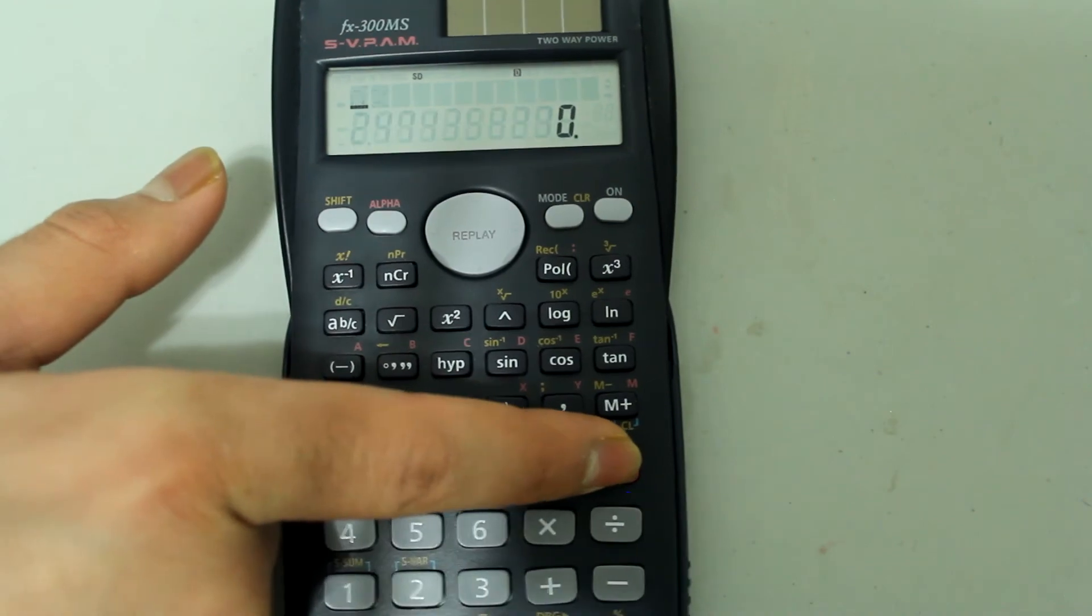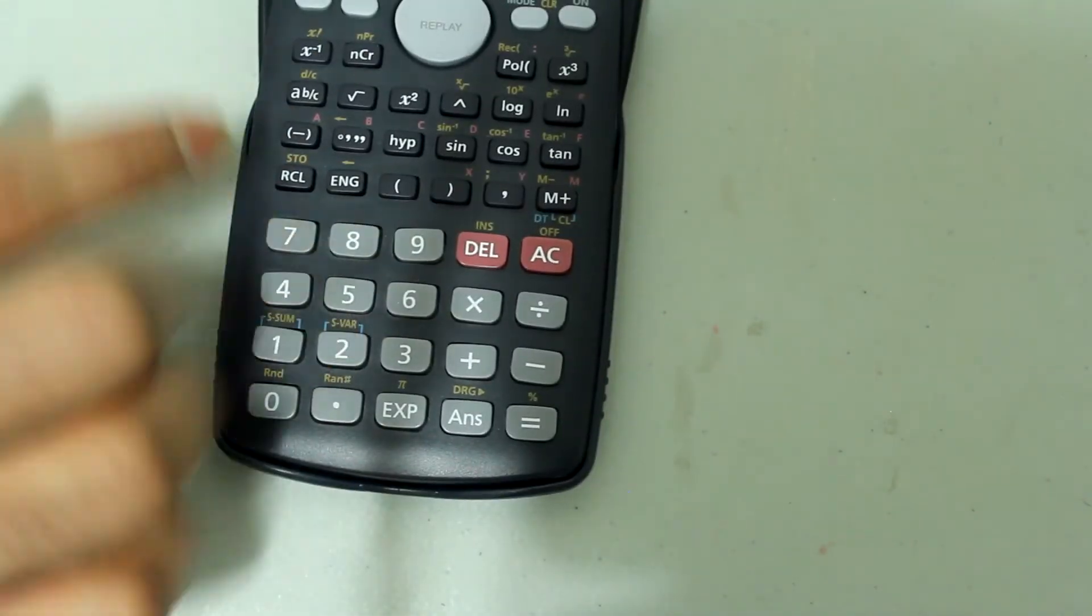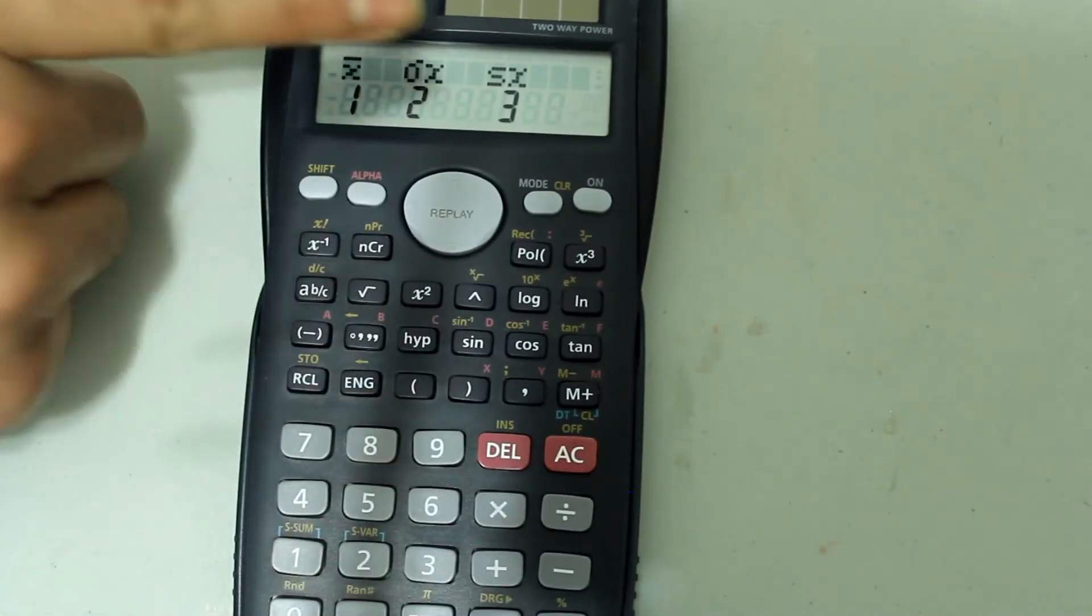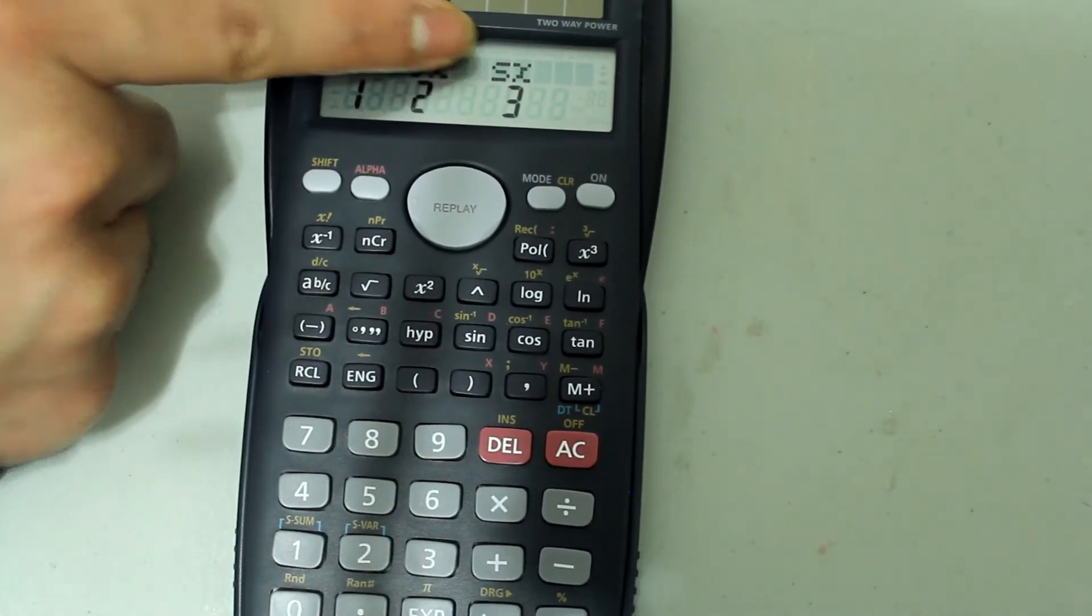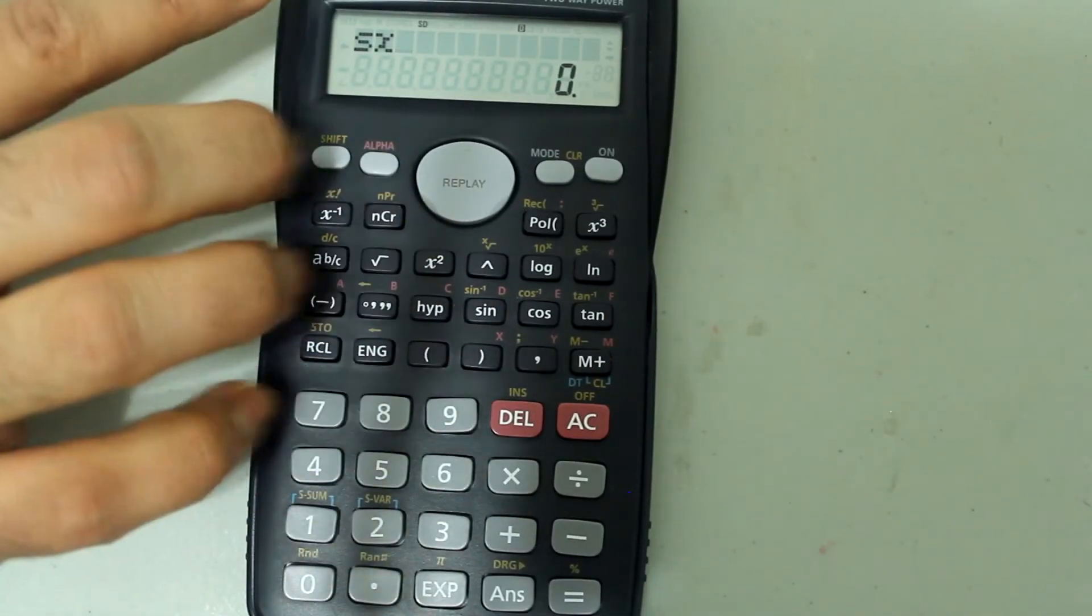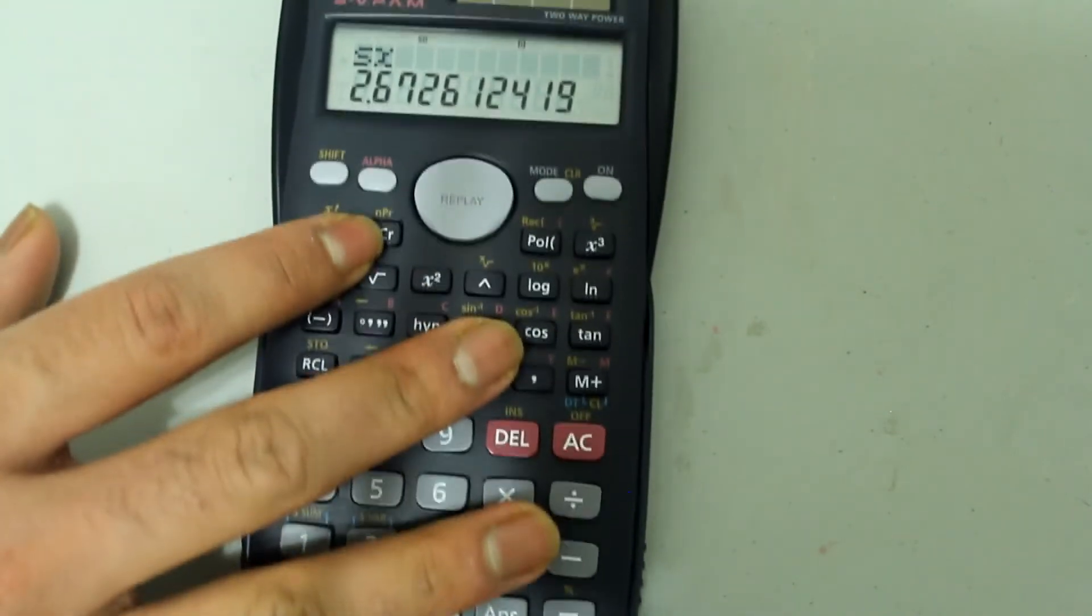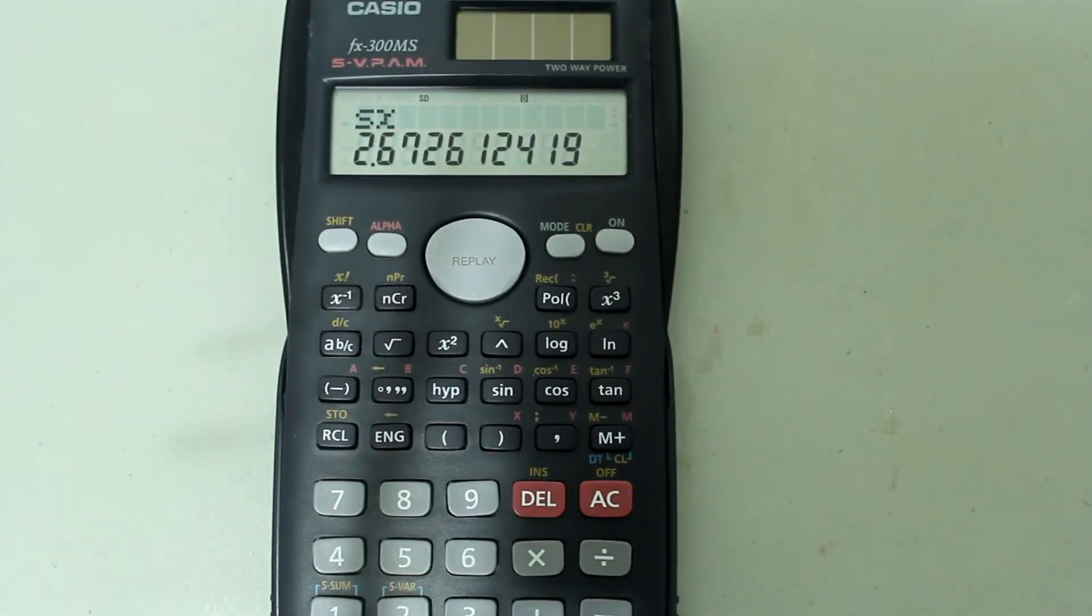Clear this out. Press shift and 2 again, and the last one is sample standard deviation, which is 3, so press 3 on the number pad. This comes up on the screen. Press equals and we get the sample standard deviation.